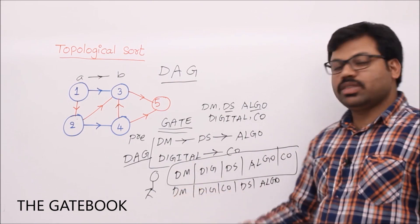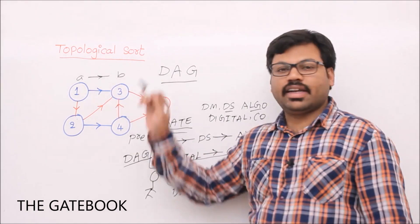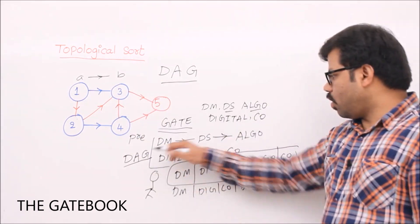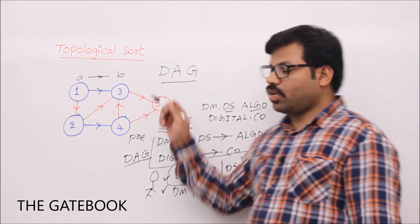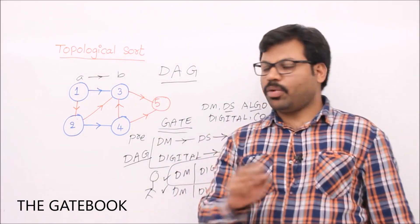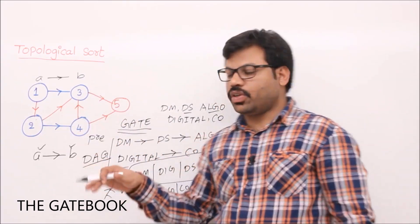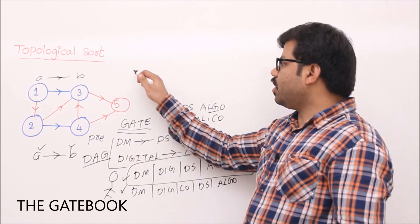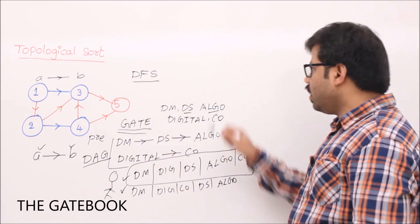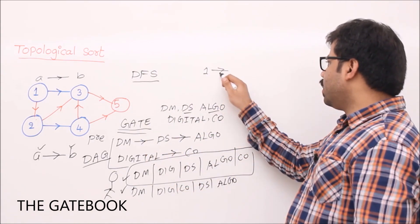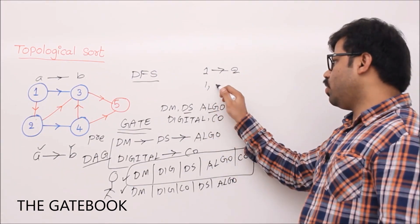All such possible orders are called topological orders. We have to find out one such order for a given directed acyclic graph. Given a graph, we are going to find one topological sort using DFS. When there are two vertices 1 and 2 with an edge from 1 to 2, the topological order is 1 followed by 2.